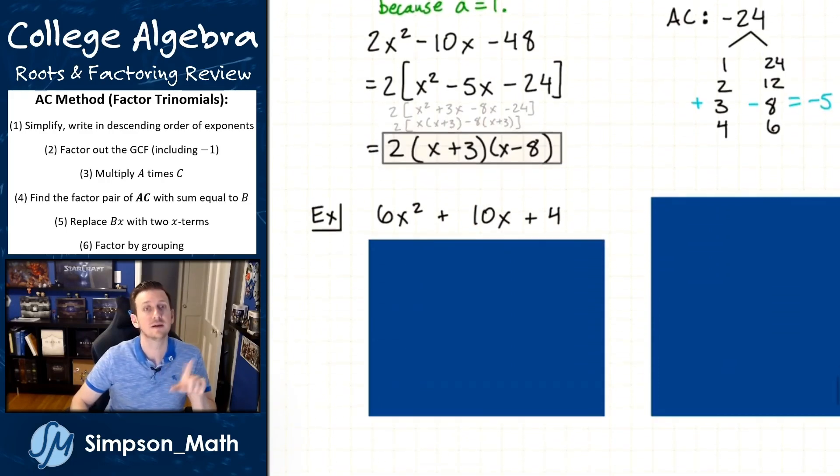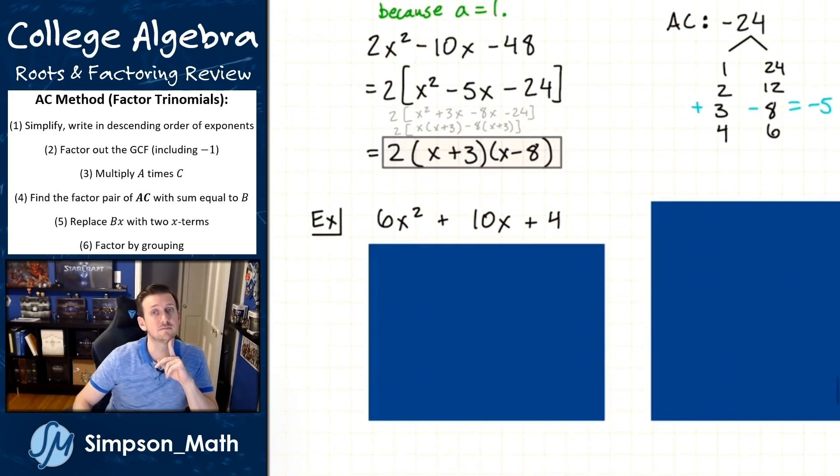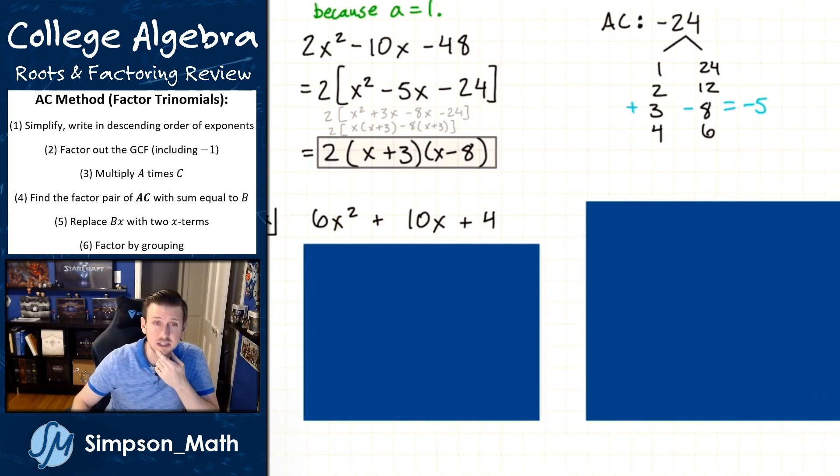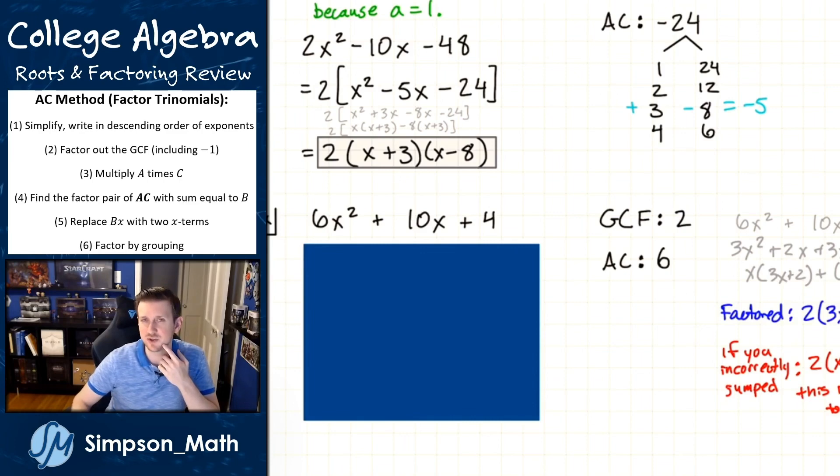I'll write this last one. Can we jump? Well, in the last one, it sure worked out, right? But what's the GCF? I see a GCF. What's the GCF? The GCF is two.